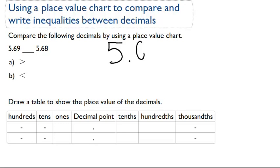So let's write these numbers down: 5.69 and 5.68. To figure out which number is greater than or less than, what we need to do is draw a place value chart.